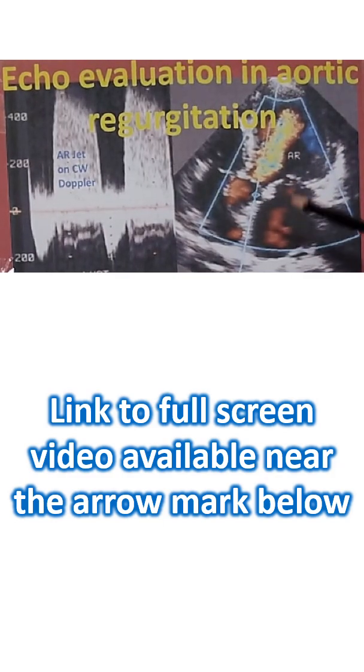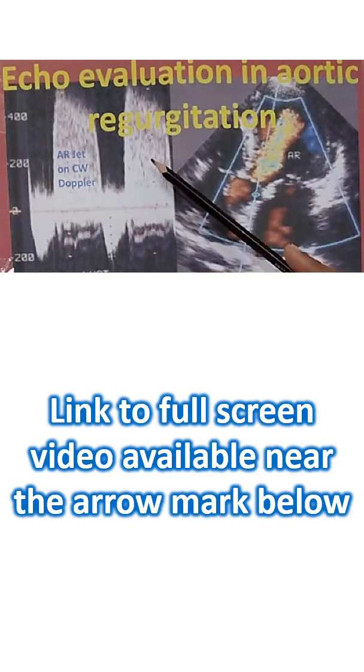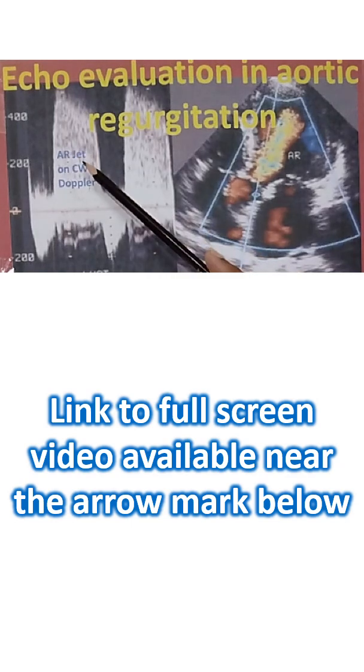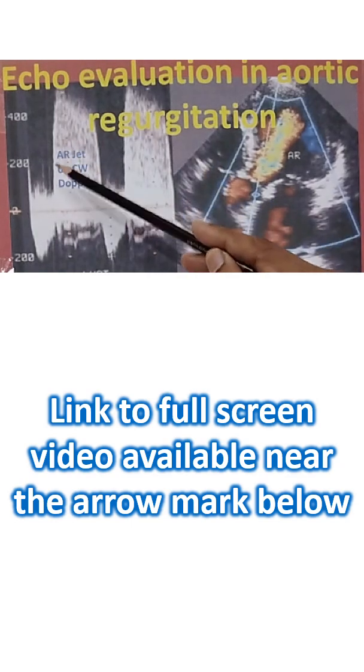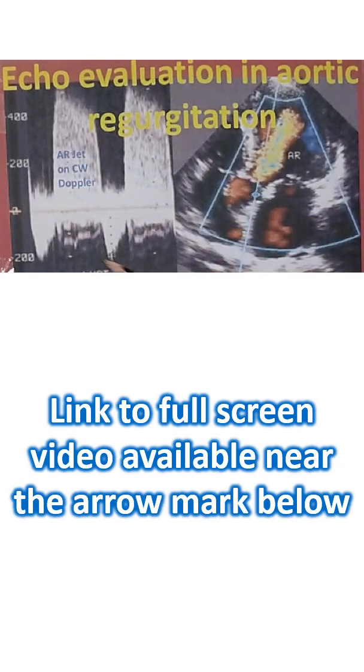The aorta is also taken as one chamber and this is the regurgitation jet into the left ventricle. You can see that the aortic valve is in closed position and the CW cursor has been placed here going through the jet. This is the forward velocity and this is the reverse flow, aortic regurgitation jet in diastole. This is systolic.